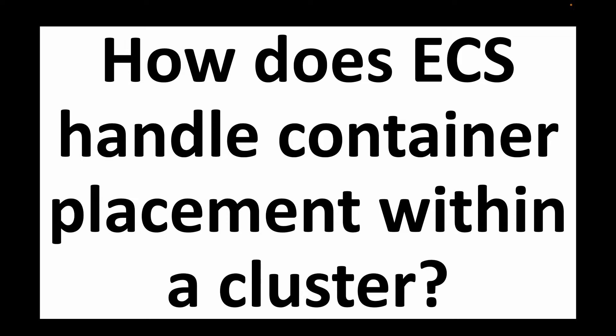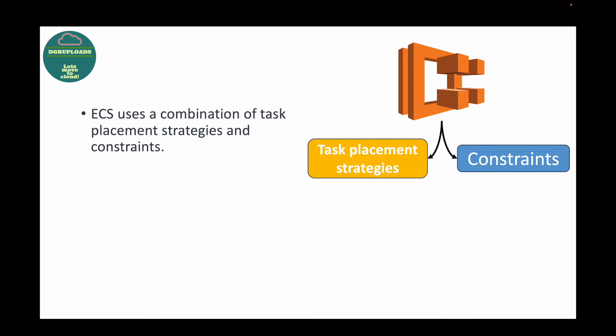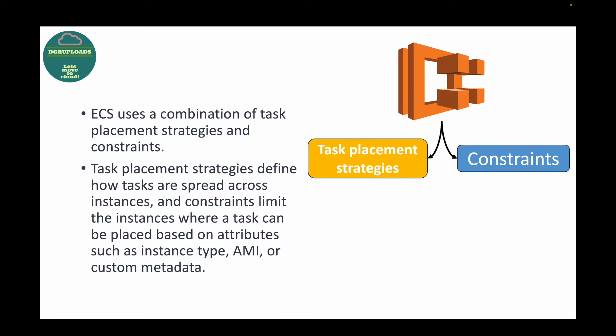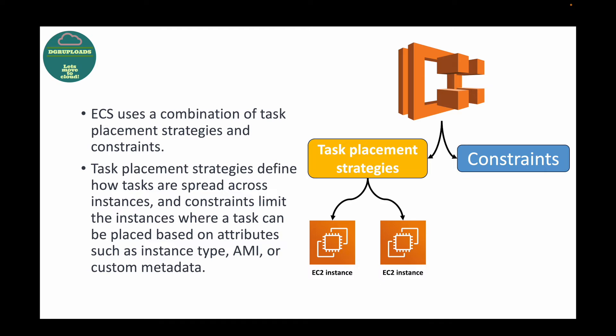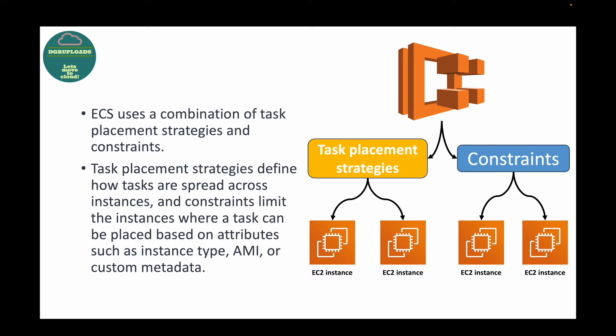The next question is: how does ECS handle container placement within a cluster? When we execute a task definition or create a service, ECS manages those containers by following a combination of task placement strategies and constraints. The task placement strategy is simply spreading your tasks across your instances — for example, if we have two EC2 instances and want to create two tasks, ECS will use this strategy and spread the tasks across those two instances.